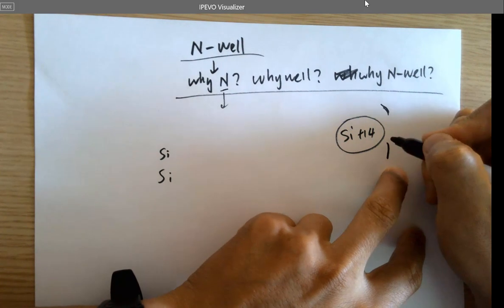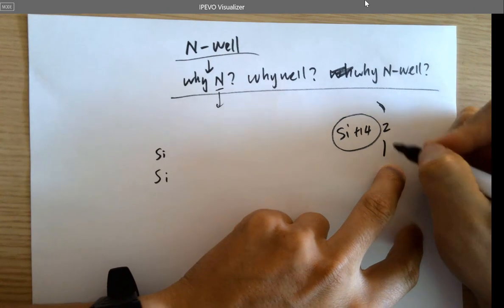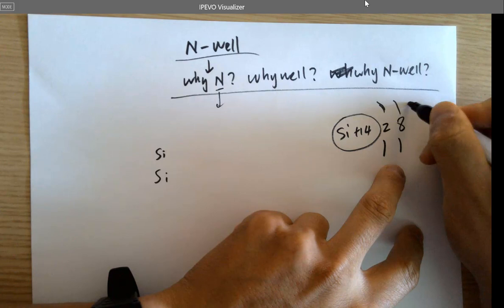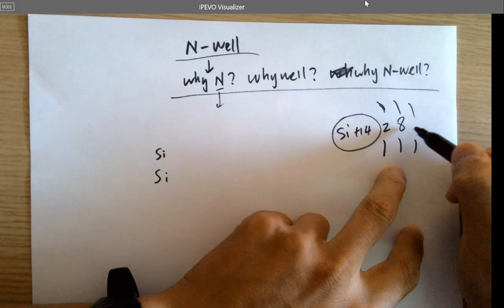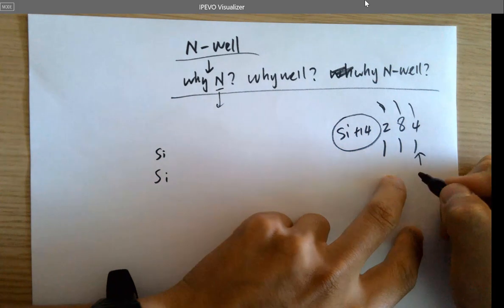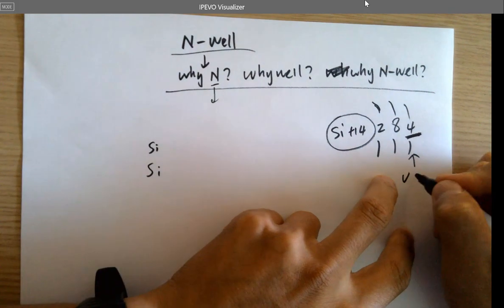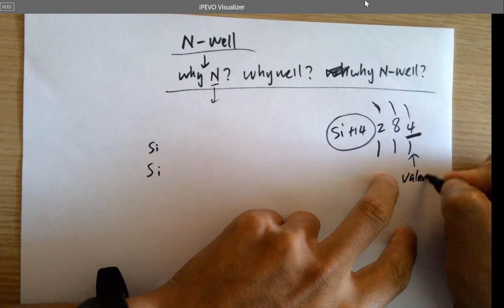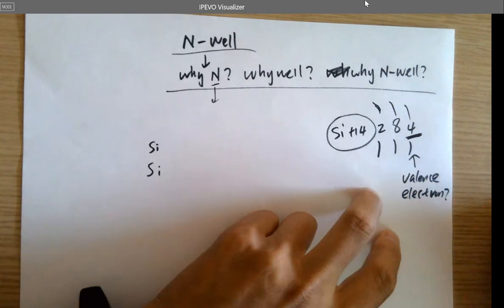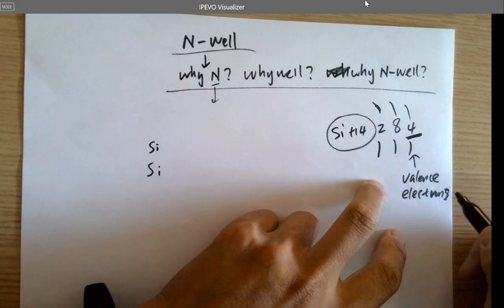The electrons are arranged in orbits. Silicon has two electrons in the inner layer, then eight in the next layer. So how many are left for the outer layer? Four. This outer layer electrons are also called the valence electrons. Most of you have heard about this concept — valence electrons are involved in chemical bonds with other atoms.